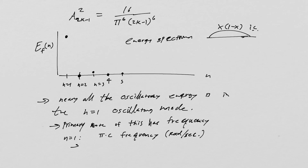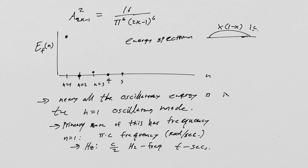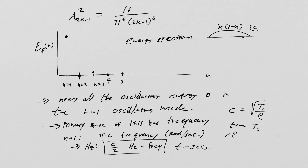If I want to talk about what it is in hertz, I have to divide by 2, so C over 2 is going to be the frequency in hertz, provided T is in seconds. Remember, C equals the square root of tension over rho, so you can tune the tension and density to get whatever primary frequency you need.